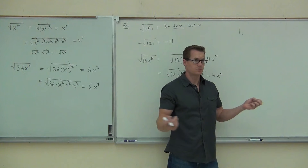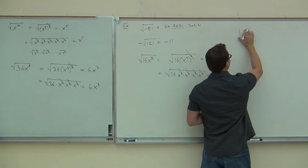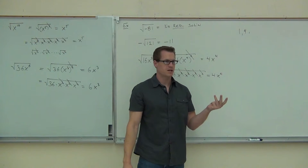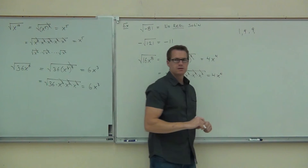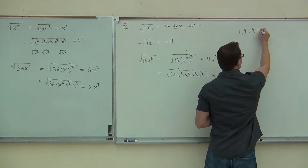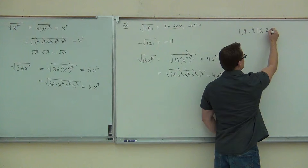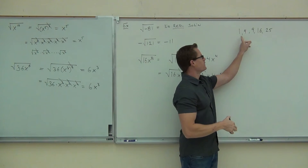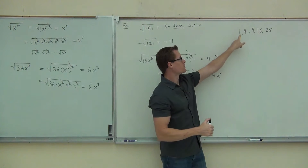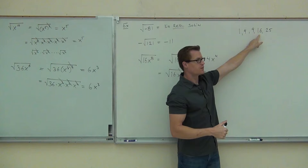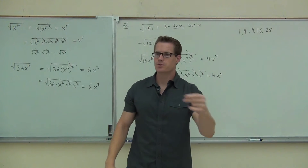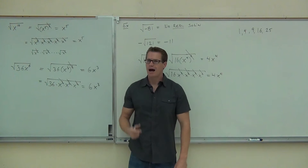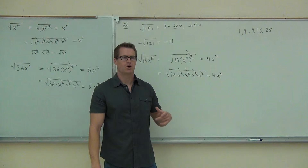Then 16, 25, 36, 49, 64. How are we getting these numbers? Are you just guessing and checking, or is there an easier way? Square root of 1 is 1, square root of 4 is 2, square root of 9 is 3, square root of 16 is 4, square root of 25 is 5. How are you getting those numbers 1, 2, 3, 4, 5 into those results? You're multiplying them together — squaring them. These numbers are called perfect squares.